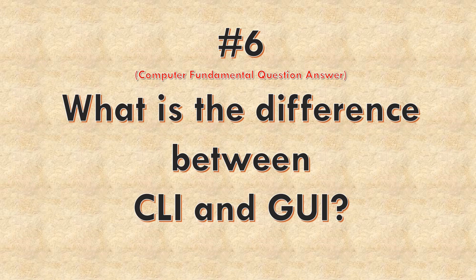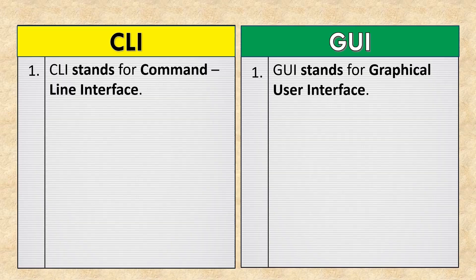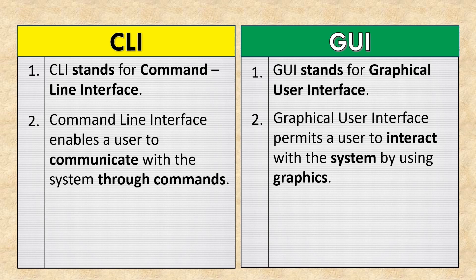What is the difference between CLI and GUI? CLI stands for Command Line Interface, while GUI stands for Graphical User Interface. Command Line Interface enables a user to communicate with the system through commands. Graphical User Interface permits a user to interact with the system by using graphics.